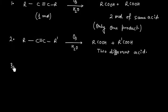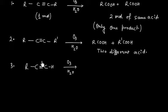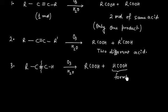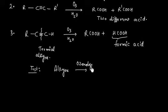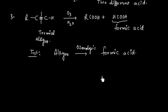If I have a terminal alkyne and if I do ozonolysis, in this case we will get one molecule of acid and one molecule of formic acid. So formic acid is the product if my alkyne is terminal. This can be used as a test: if an alkyne on ozonolysis gives formic acid, this means the alkyne is terminal.